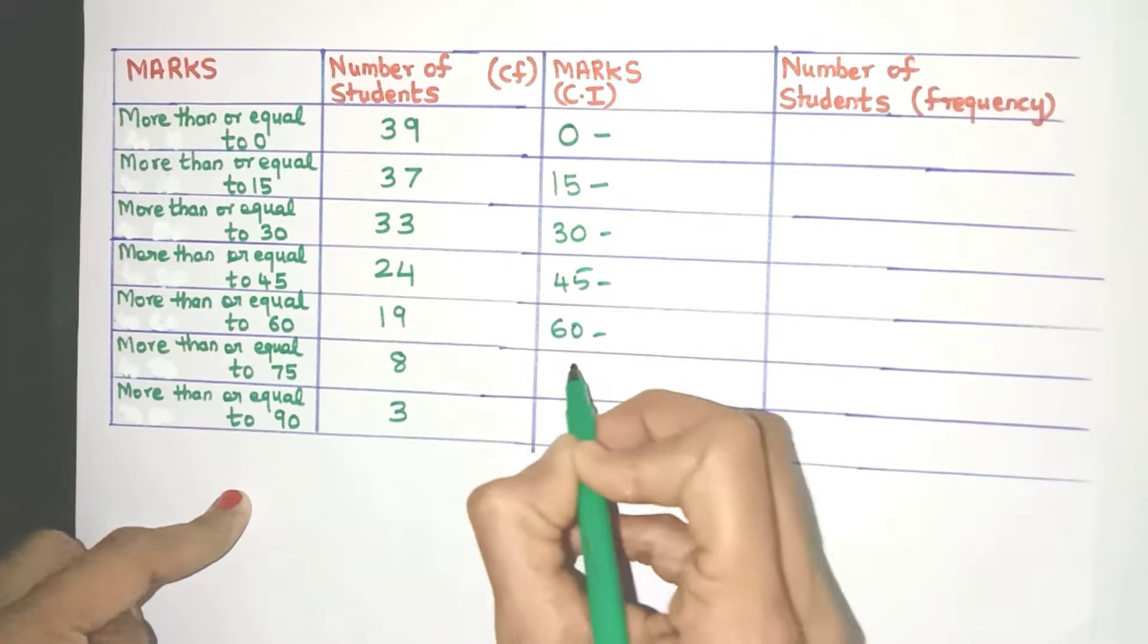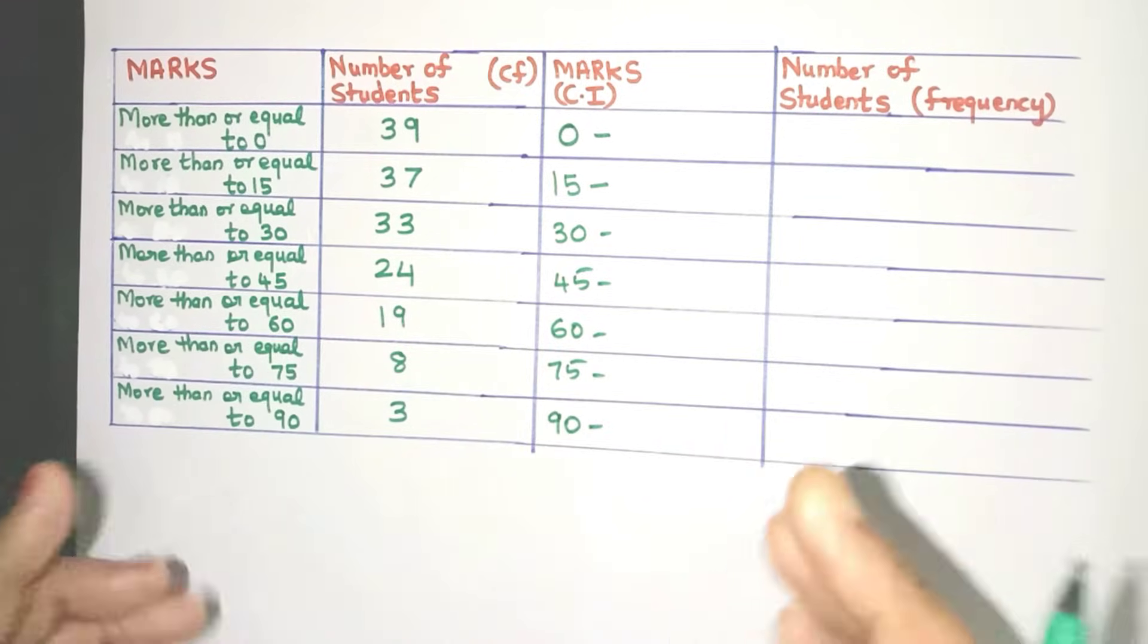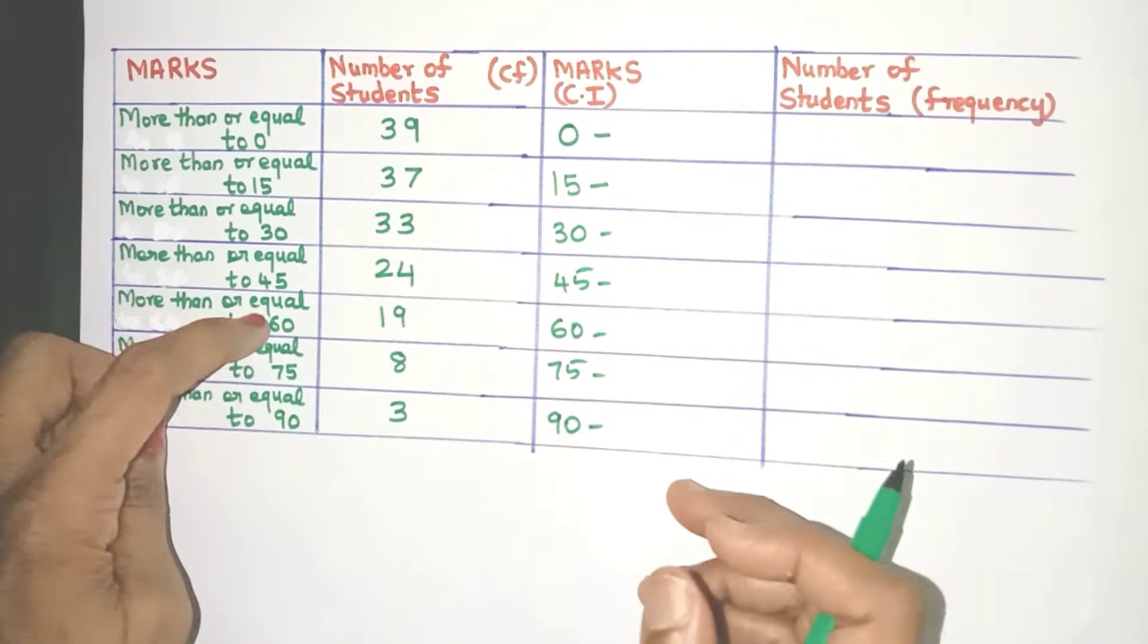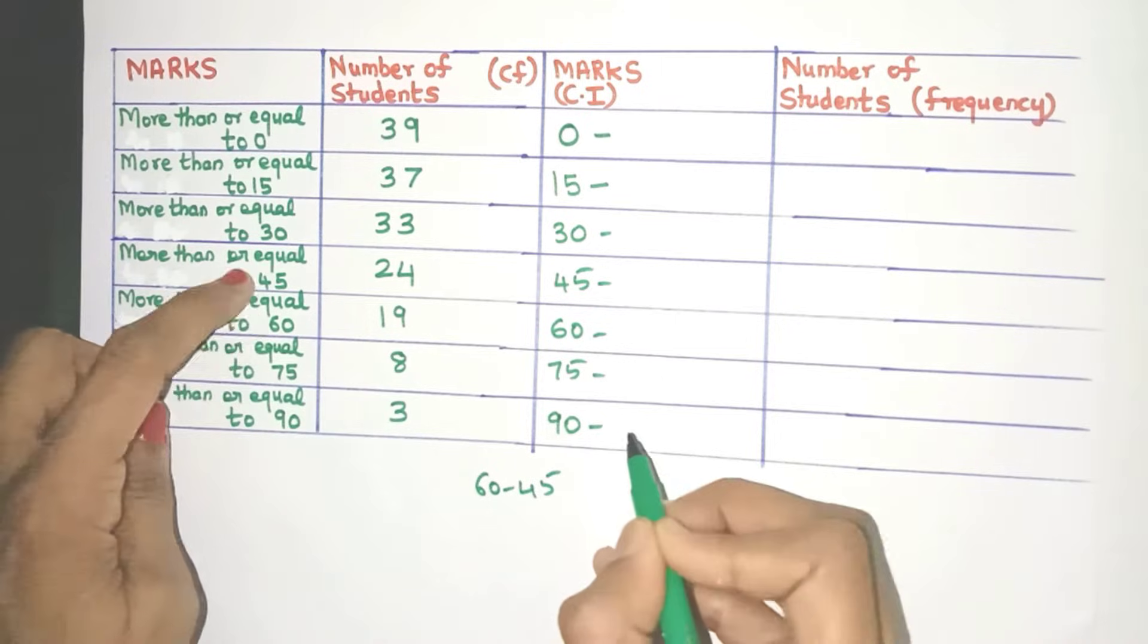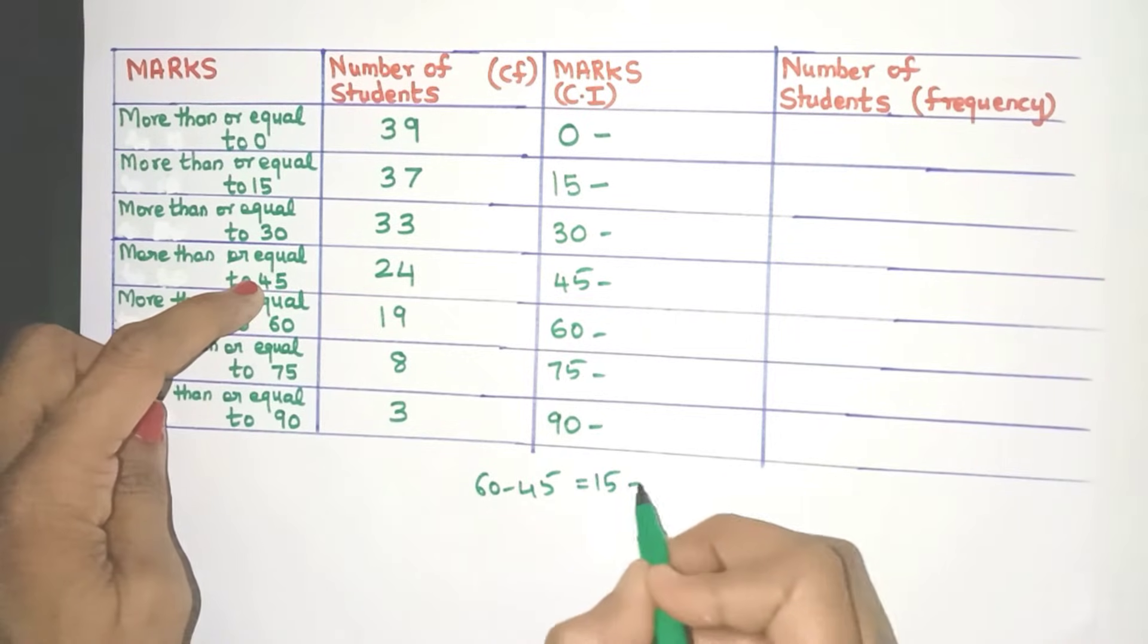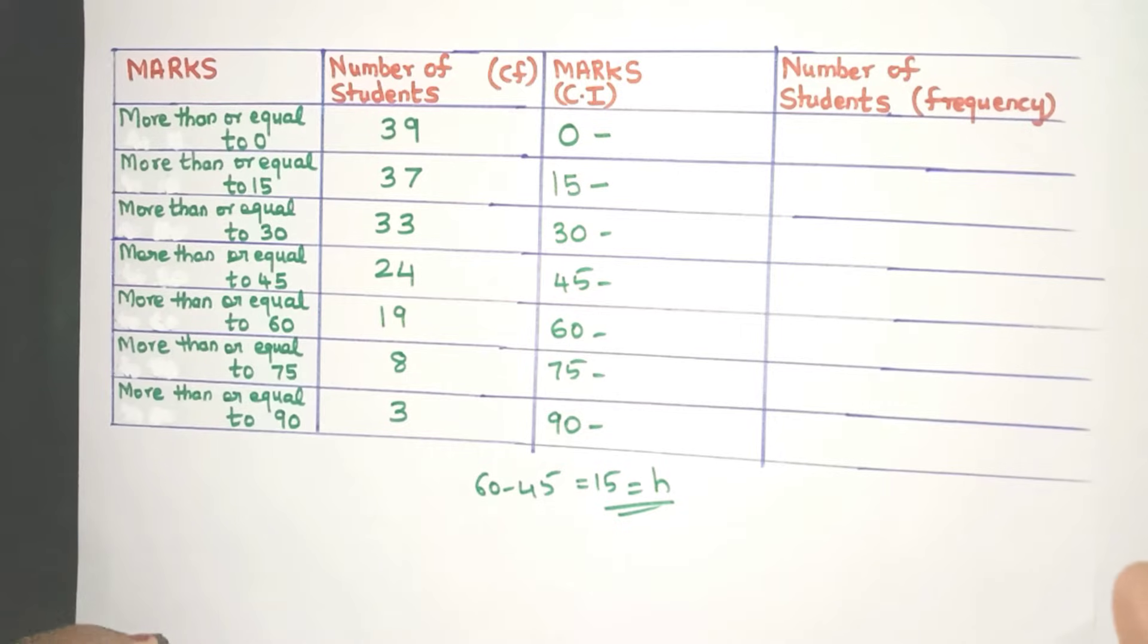See 60, 75 and 90. Now what about the upper class limits? Again, observe these numbers. What is the gap between them? Yes. Let's just take any two rows. 60 minus 45. The gap is 15. That is going to be your class size.